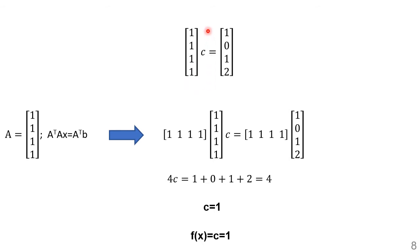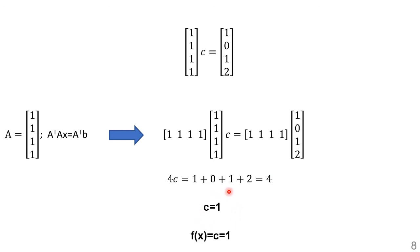We write this in matrix form: A = [1,1,1,1]ᵀ and b = [1,0,1,2]ᵀ. Applying the normal equation AᵀA·c = Aᵀb gives 4c = 4, so c = 1.